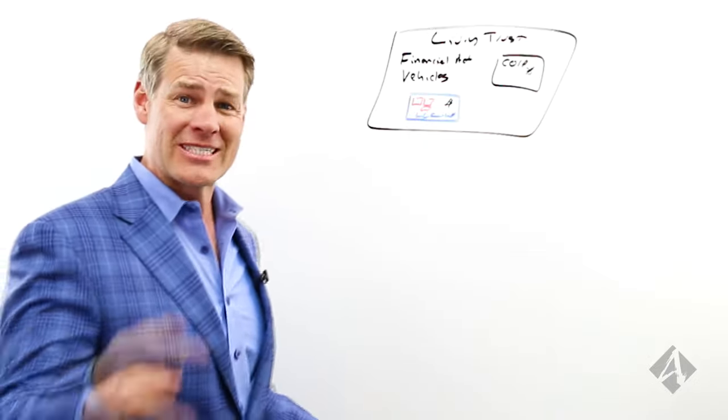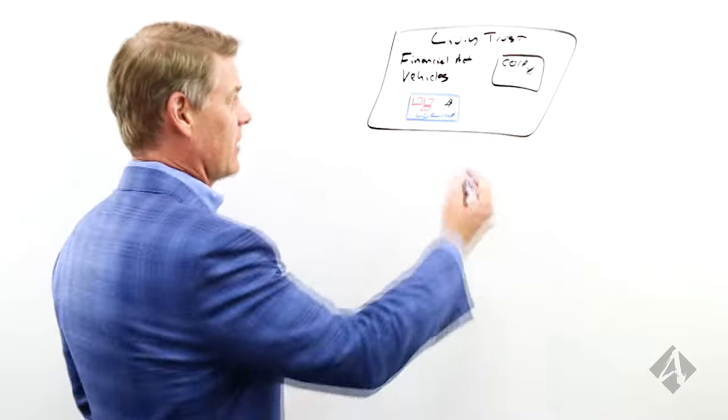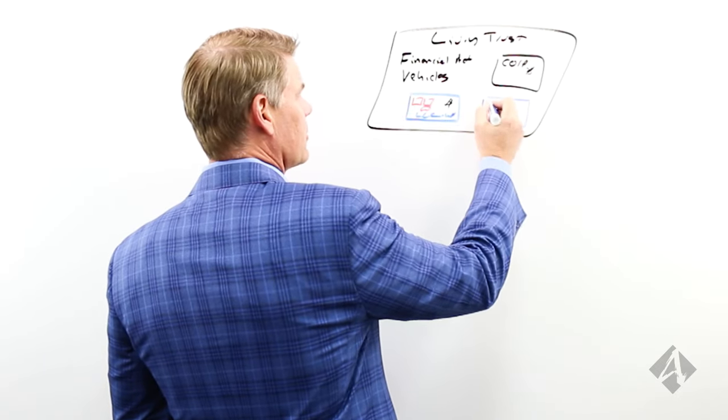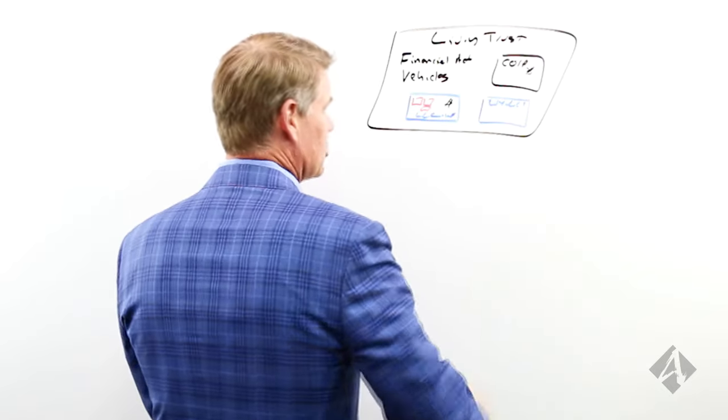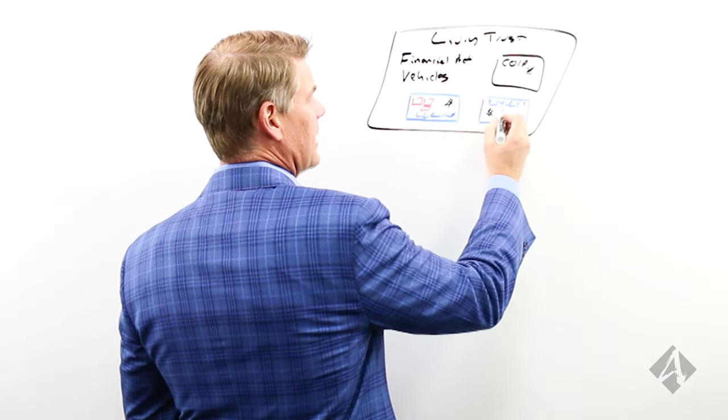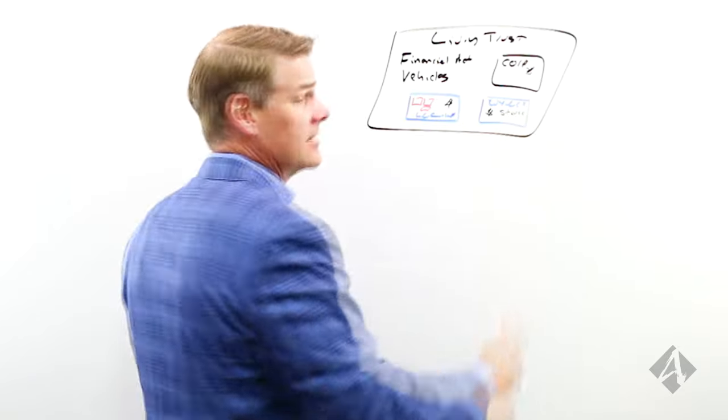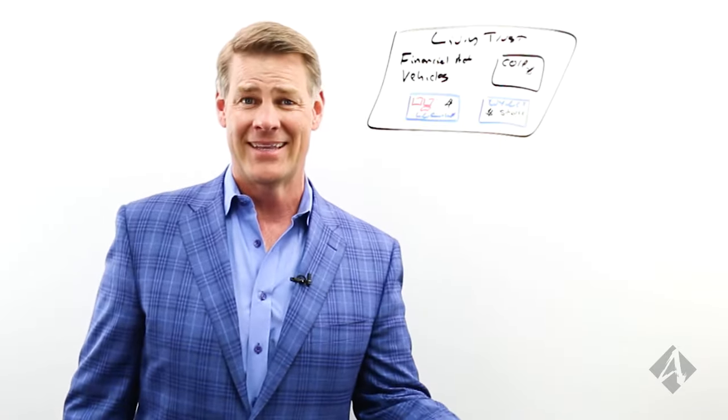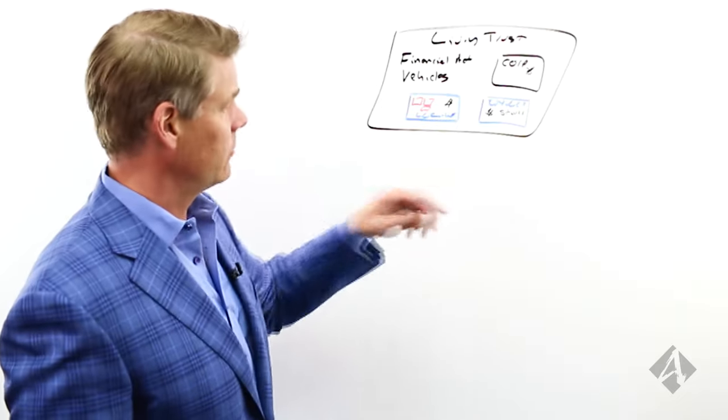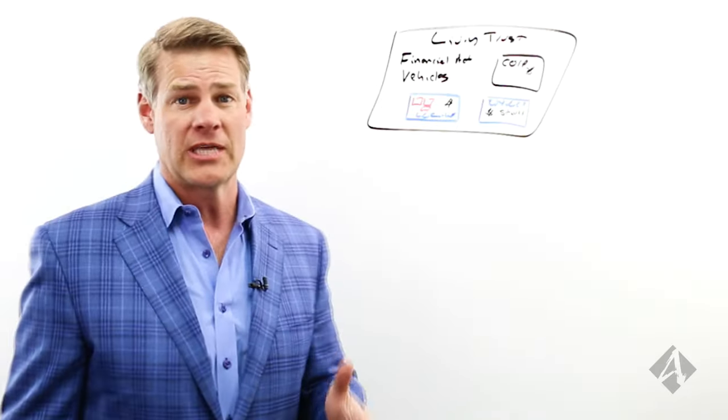So what you need to do is set up a limited liability company for that. Set up a Wyoming LLC for your brokerage account. Hopefully you've already done this. It should hold your savings. Put your brokerage account and your savings account inside of this LLC for asset protection. And then put the LLC into there. Because we want to stay consistent with how we're doing our structuring to make sure we're protected.